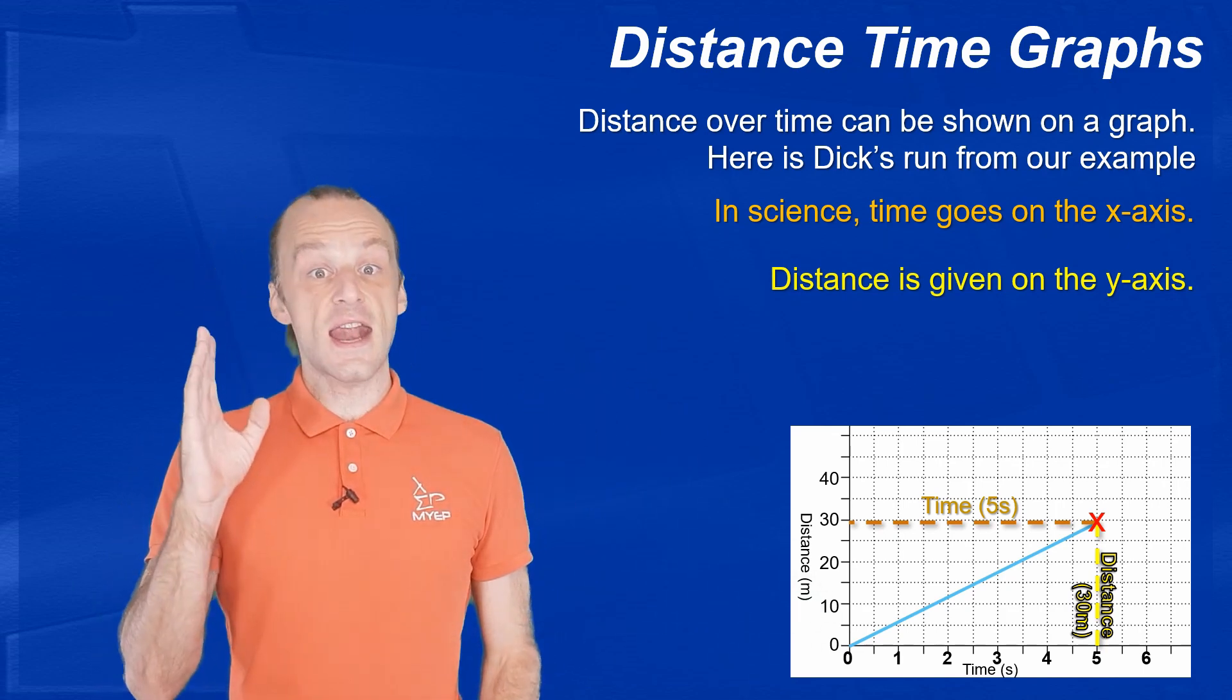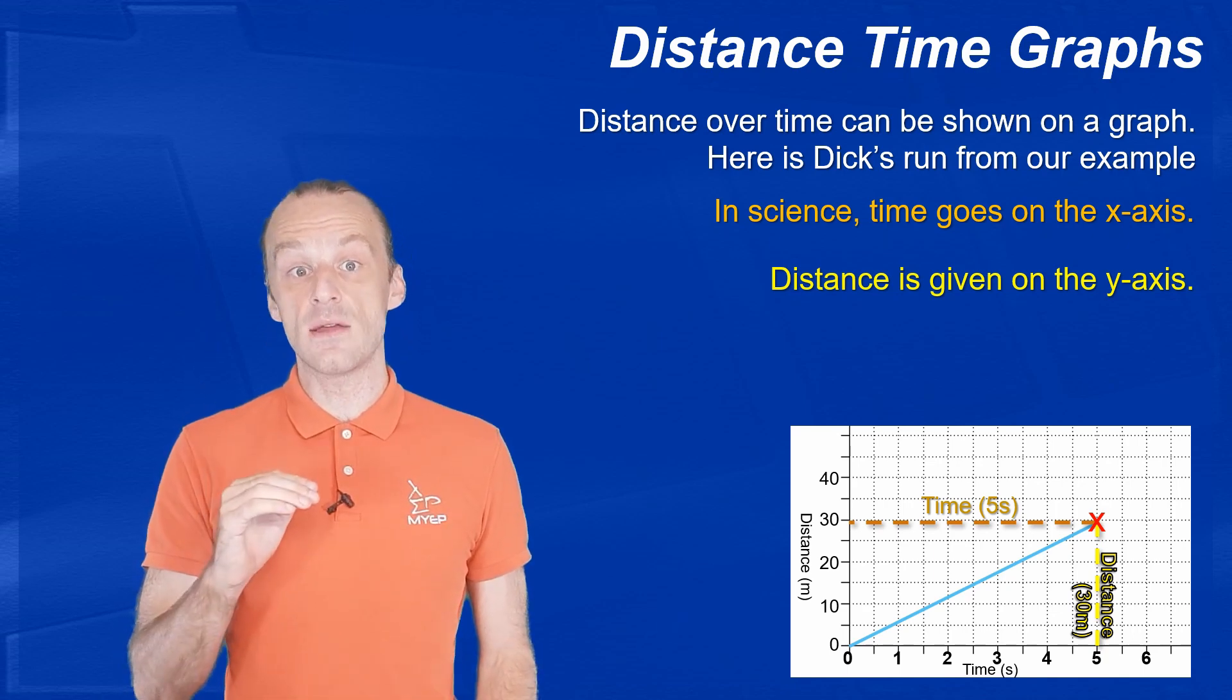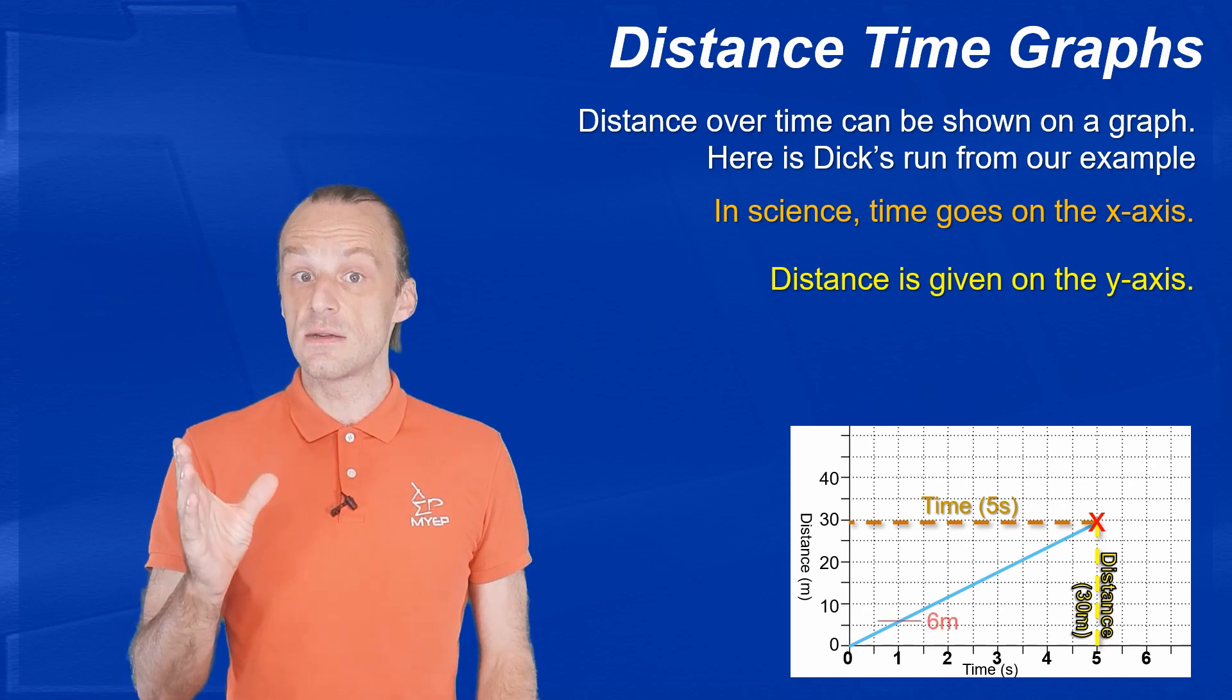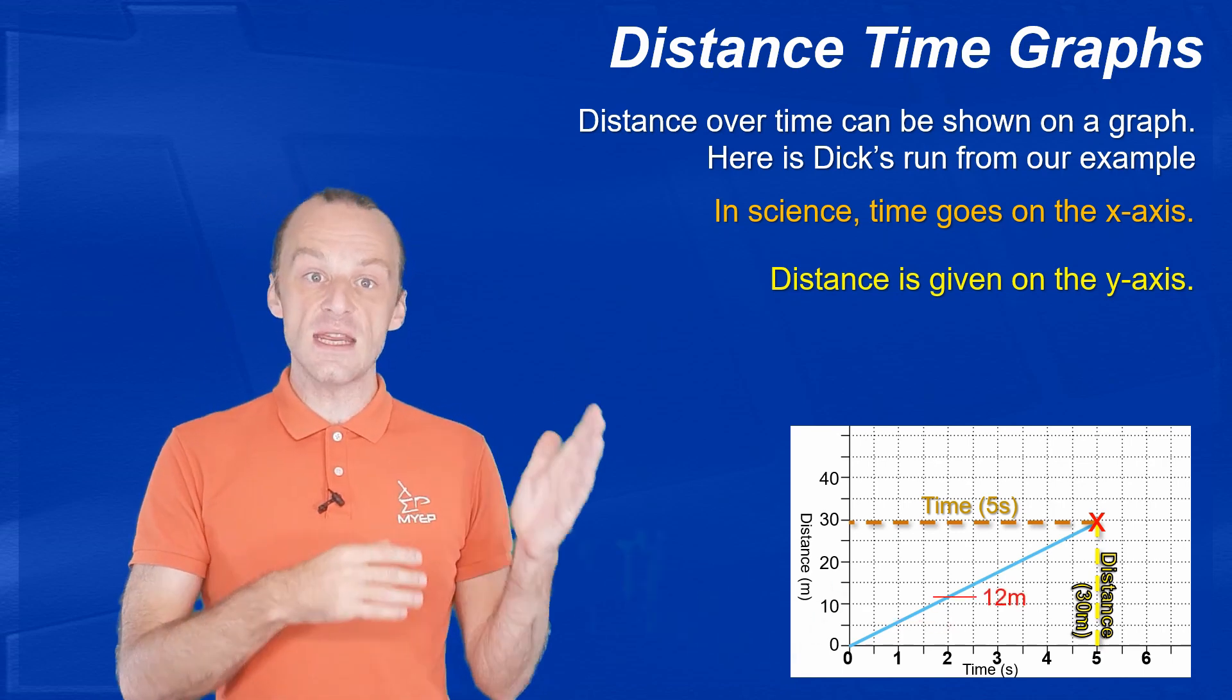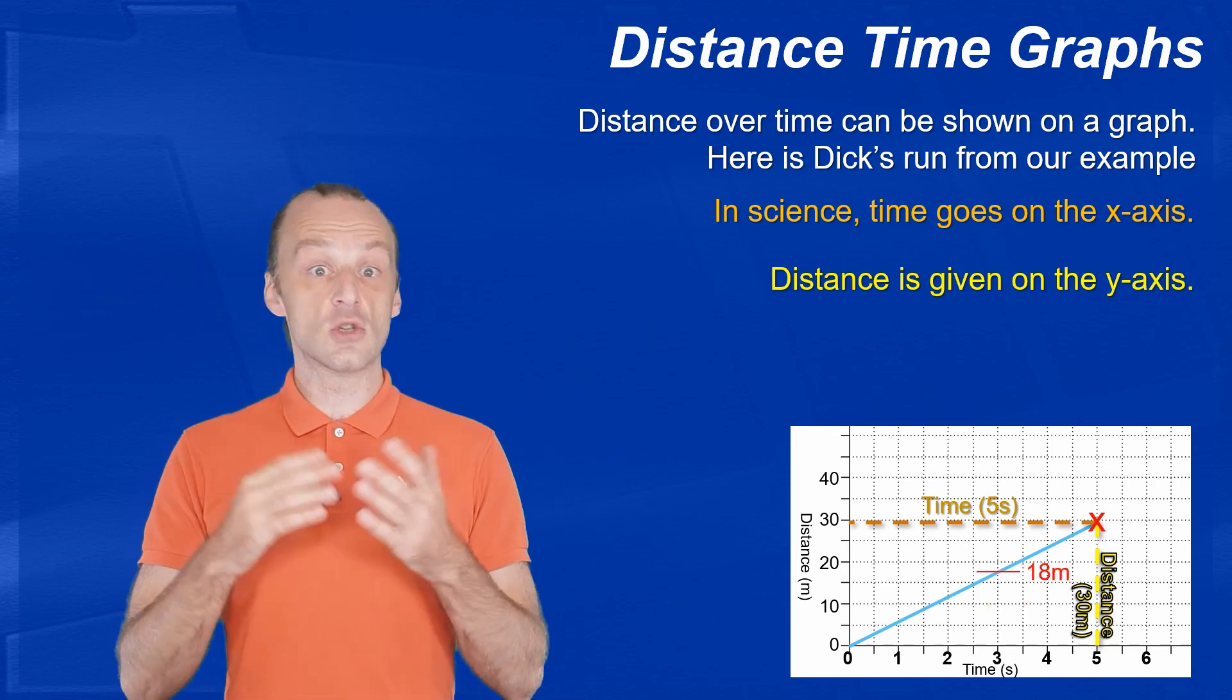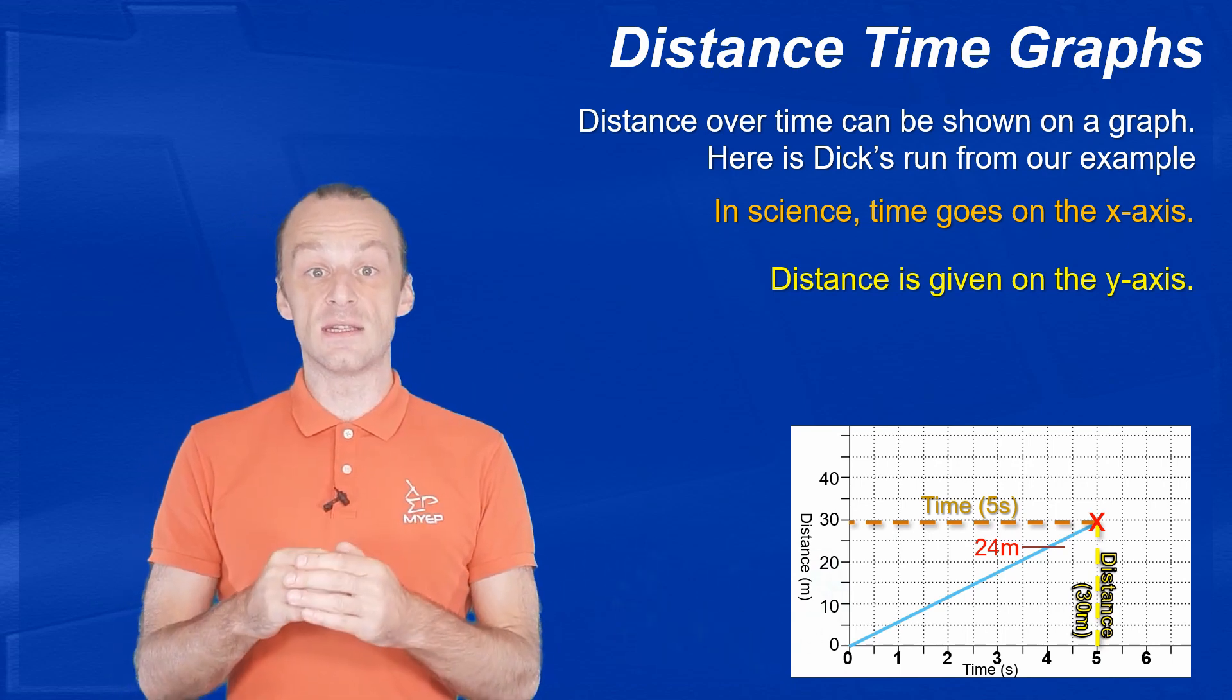You can see that every second, Dick's distance increases by the same amount. At 1 second, he is at 6 meters. At 2 seconds, he is at 12 meters. 3 seconds, 18 meters. 4 seconds, 24 meters. And so by 5 seconds, he has reached 30 meters.